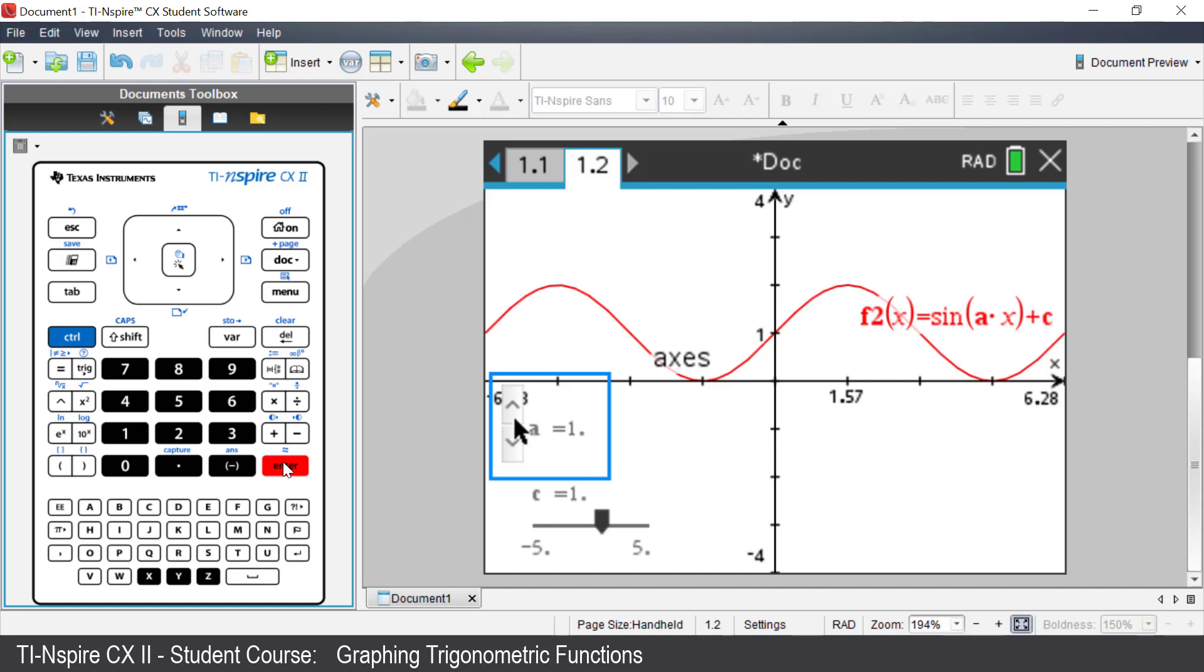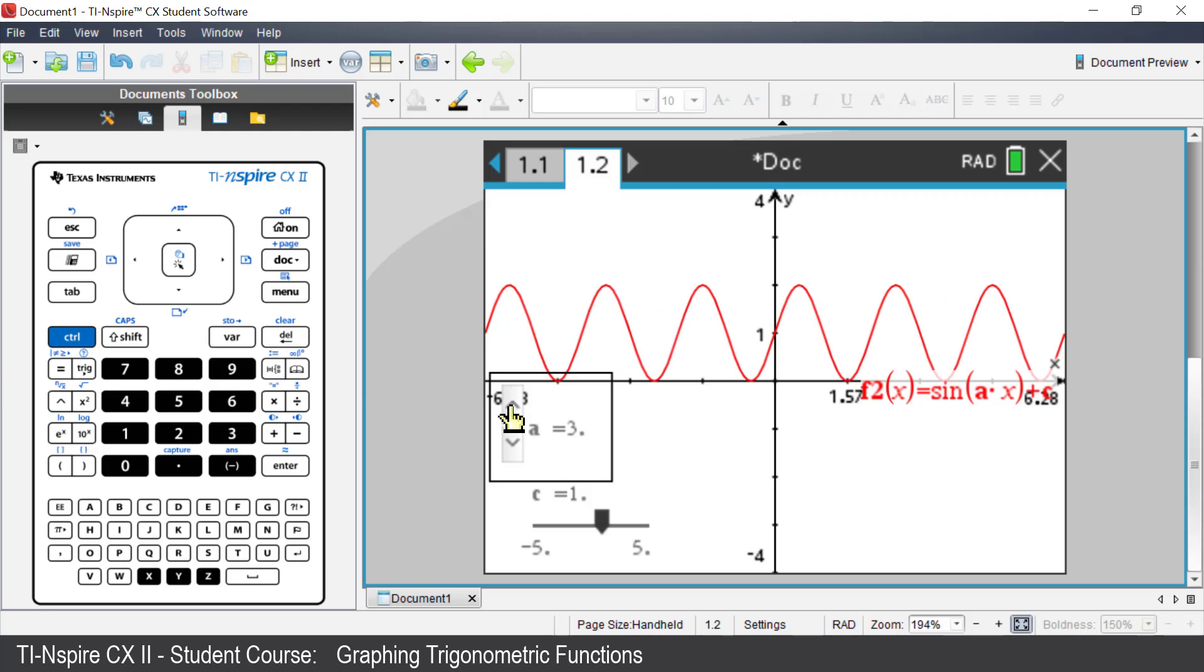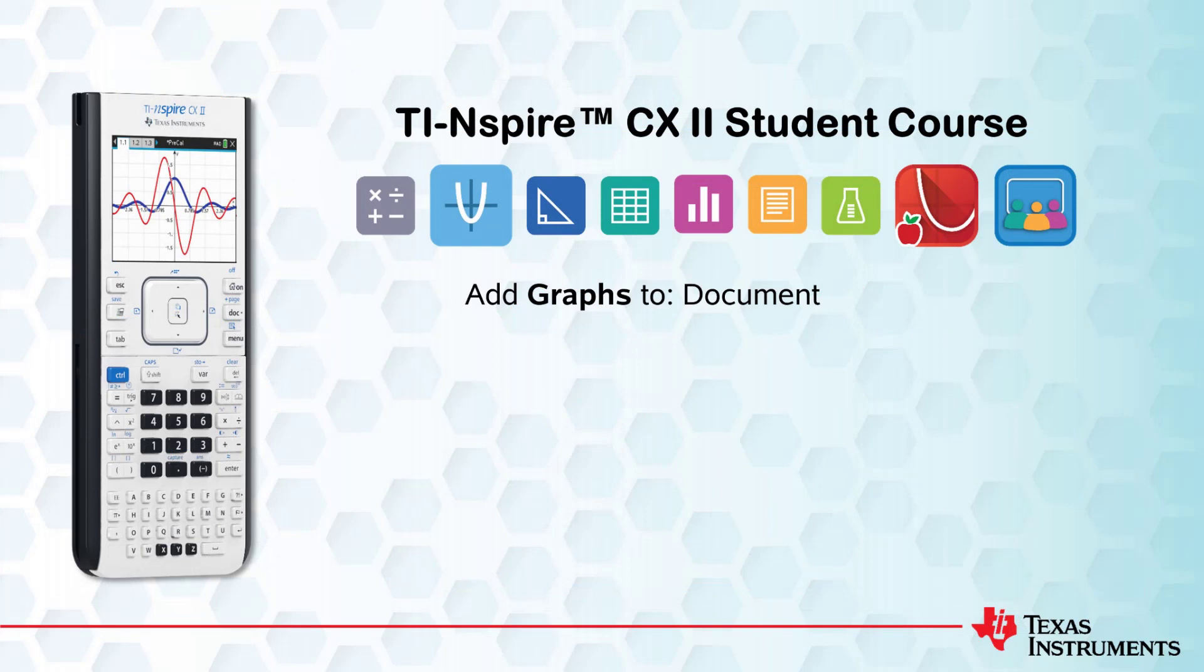You now have a Vertical Minimized slider. Press the up and down arrows of the slider to change the sliders by 1. Slider C can be changed to suit your preferences. Be sure to check out more of the videos in this series. Thank you for watching.